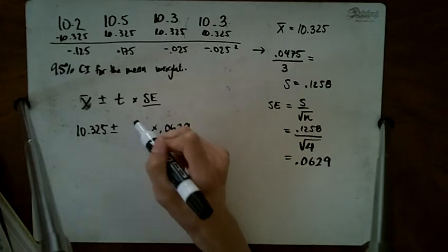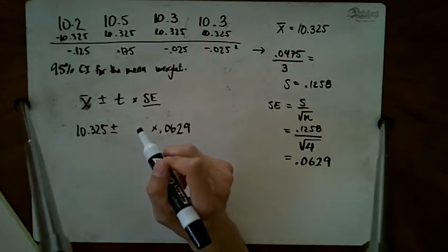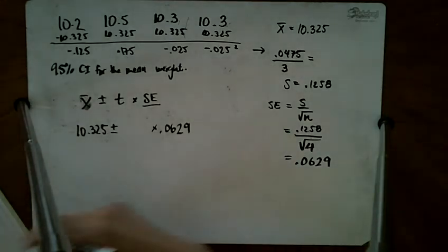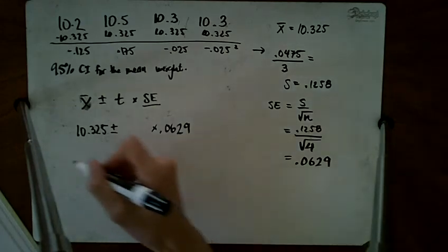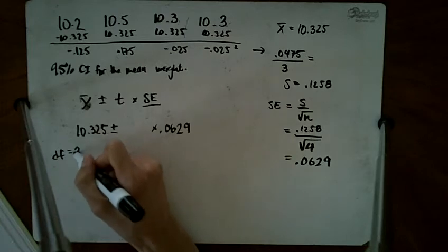The critical t, I find by going to the t distribution, and I'm looking up under 95% confidence for 3 degrees of freedom. When I have 3 degrees of freedom, because it's n minus 1...